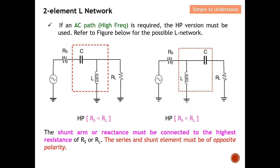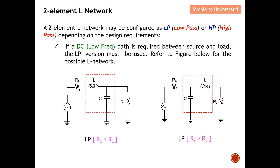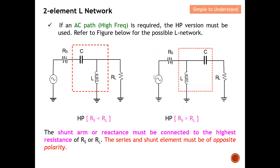The shunt arm or reactance must be connected to the higher resistor (RS or RL), and the series and shunt elements must be of opposite type — if one is a capacitor, the other must be an inductor. As a memory aid: for a high pass filter the top element is a capacitor, while for a low pass filter the top element is an inductor.